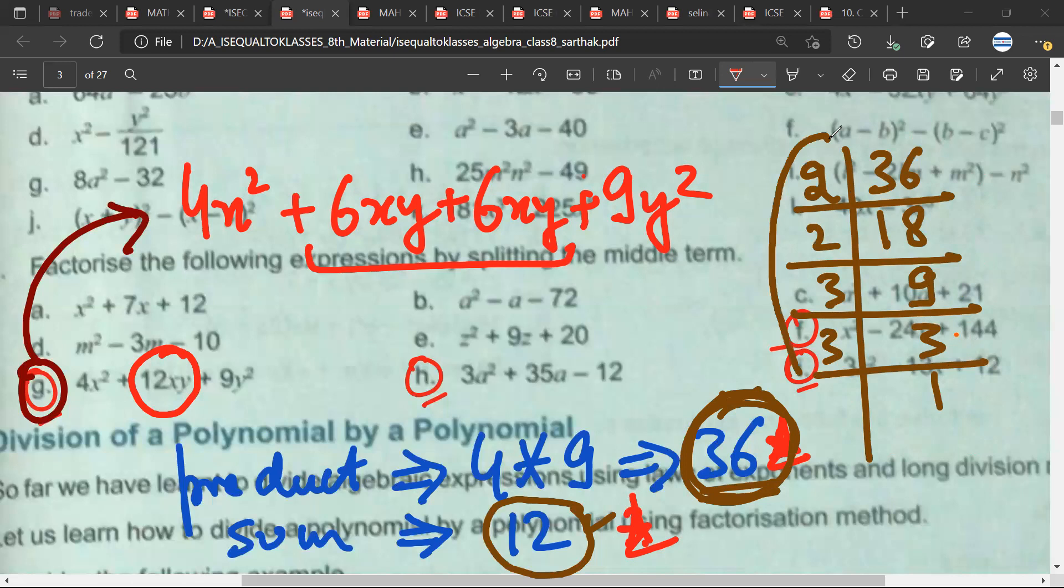Now using these numbers, using these five numbers 2, 2, 3, 3, 1, I will try to make two numbers whose product is 36 and whose sum is 12. Mr. Sartak, have you understood? Yes.